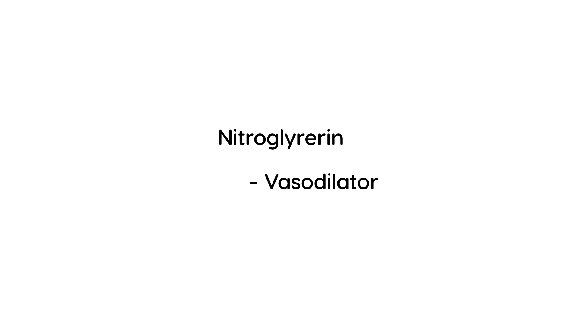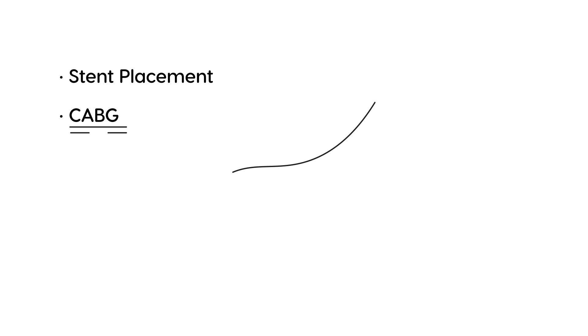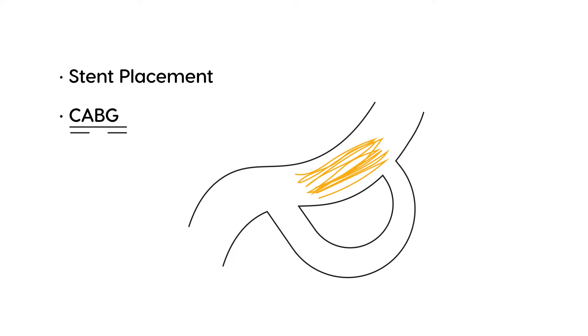There are other medications as well, but those are by far the most important. The two surgical treatments are stent placement, which we just discussed, and CABG — coronary artery bypass graft. Sometimes you have so much atherosclerosis that you can't even place a stent, so they perform a bypass graft, routing blood around that blocked area. It's an elaborate surgery, but very important.